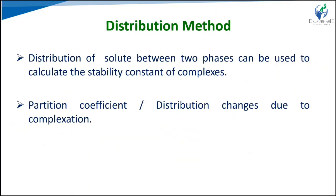The distribution method describes the distribution of solute between two immiscible solvents and is used to determine the stability constant for certain complexes. The partition coefficient — or distribution coefficient — of solute between two phases can be calculated. The change in partition or distribution coefficient due to the complexation process is analyzed.